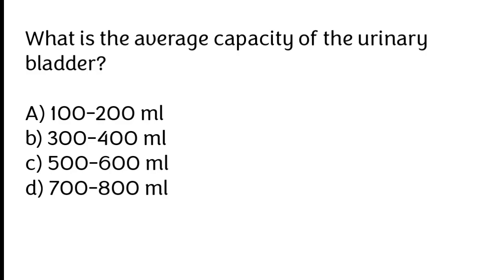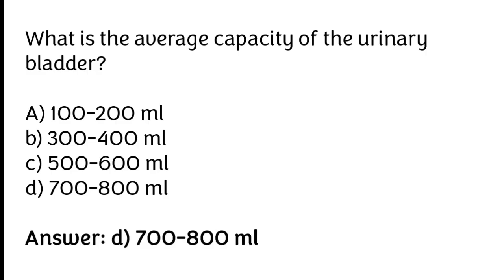The correct answer is option D. The average capacity of the urinary bladder is 700 to 800 ml.